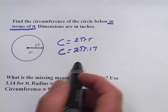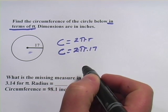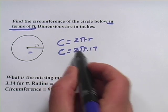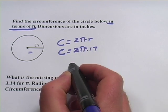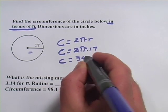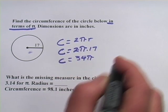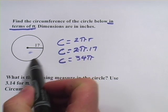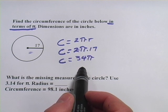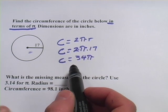When they say in terms of pi, you'd leave the pi there. It's actually one fewer steps. So what we would do is take the 2 times the 17, which is 34, and you'd have a circumference equaling 34 times π, or we could just say 34π. So the circumference of this circle, in terms of pi, is 34π.